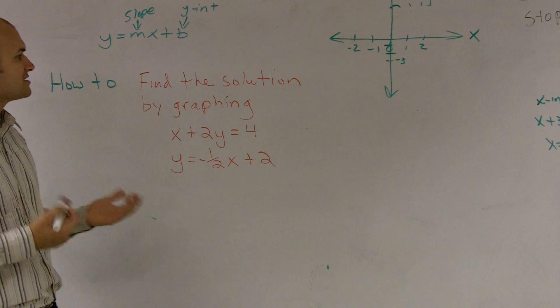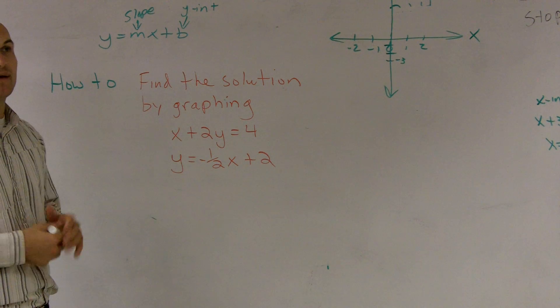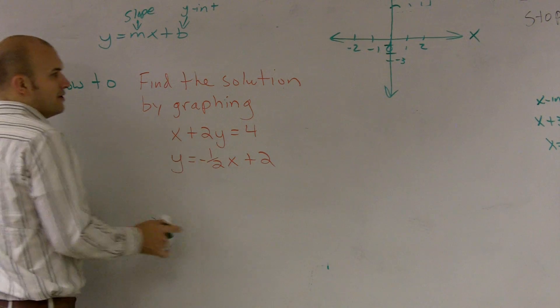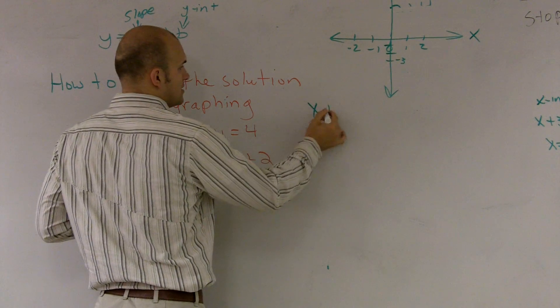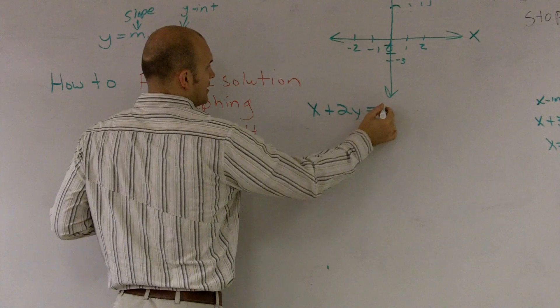So when it says to find the solution by graphing, we're going to have to graph them and look and see where their intersection is. So the first point is I need to graph this line, x plus 2y equals 4.